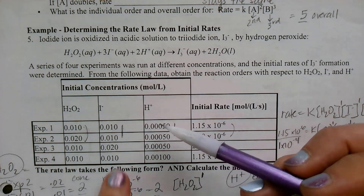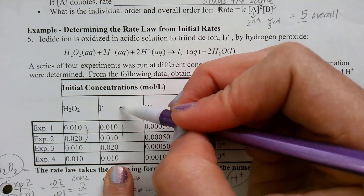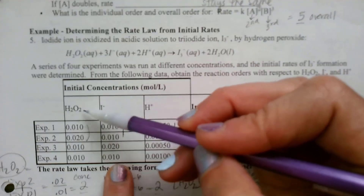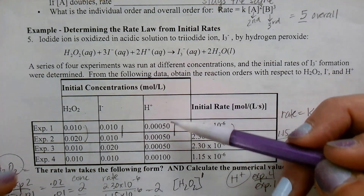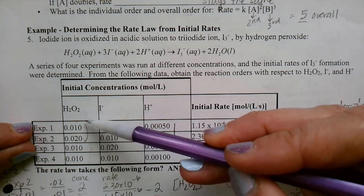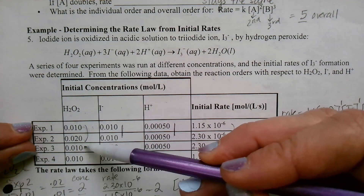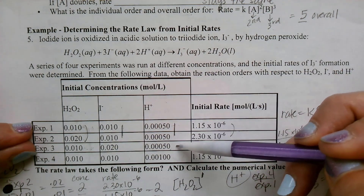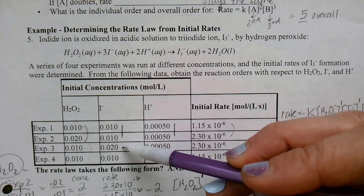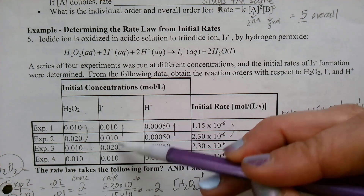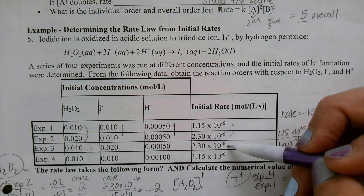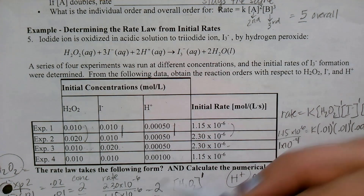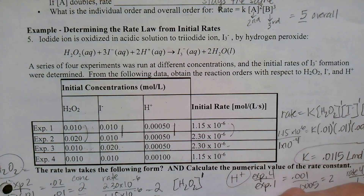Now we find the order for iodine. We need experiments where H₂O₂ and H⁺ stayed the same — that's experiments 3 and 1. H₂O₂ is 0.01 in both, and H⁺ is the same between 1 and 3. Iodine concentration: 0.02 divided by 0.01 — the concentration doubled. Rate 3 divided by rate 1 also doubled. Two raised to what power gives 2? The first power. So iodine is 1st order.